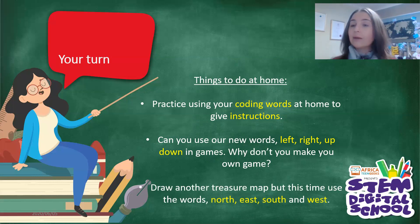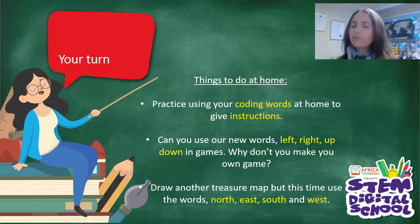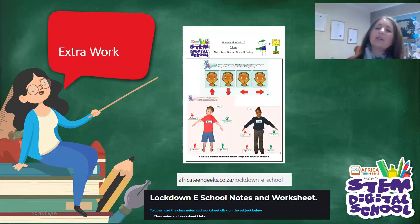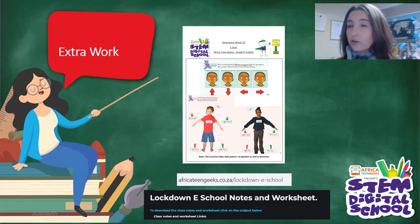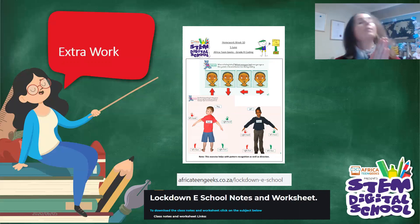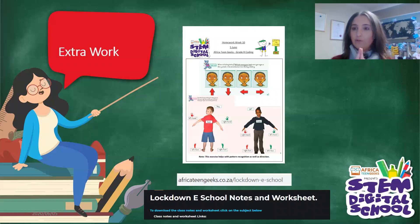Draw another treasure map, but this time use the words north, east, south and west, as well as left, right, up and down. Say, can you go in the northern direction, or can you go left five steps? This week was all about treasure hunting to teach coding. The next time I see you, we are going to try and actually code some things and perhaps use a few coding programs. We don't want to go too fast because we need to make sure that we understand the words we're going to use. On our Africa Teen Geeks site or in our slides on YouTube, you can find this exercise where you can see the girl and the boy pointing left and right, and can you figure out if the little boy's eyes are going up, down, left, or right?